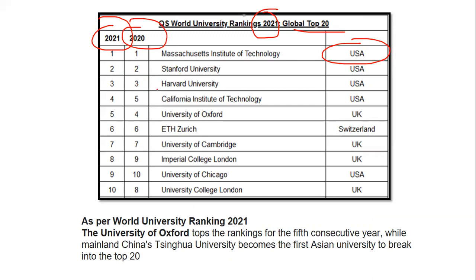As per the Times Higher Education World Rankings 2021, the University of Oxford tops the ranking for the fifth consecutive year. Also notably, a mainland China or Singapore university became the first Asian university to break into the top 20. You should prepare a handbook where you can revise these figures on the last day before the exam.